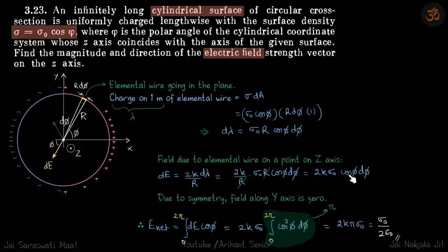This cos phi from here and this cos phi will square up to cos square phi. And cos square phi d phi integral from 0 to 2 pi is pi, it's a standard result. So our answer becomes 2k pi sigma naught or sigma naught by 2 epsilon. It's straightforward. Thank you.